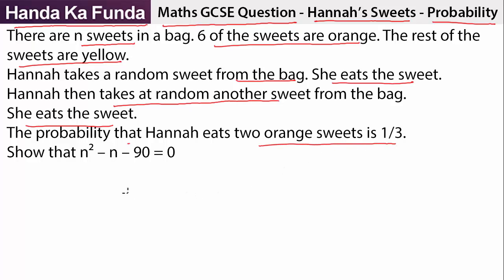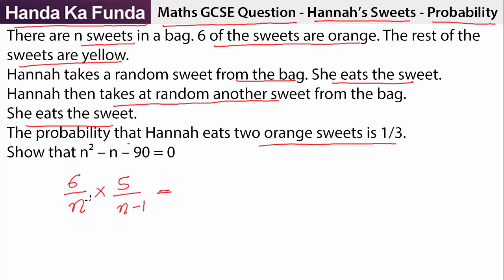What's the probability of her picking the first sweet which is orange? There are six orange sweets out of a total of N, so the probability is six by N. Then for the next one, the next time when she picks, there are five orange sweets left. The total number of sweets left is N minus one, and we are given that the overall probability — which is P(A) into P(B) in case of independent events — is given to me as one by three.